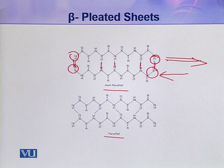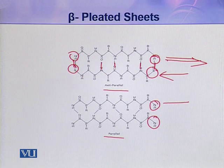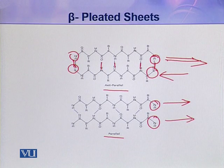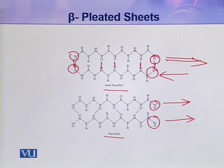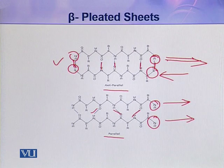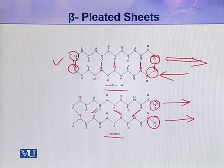In the parallel beta pleated sheet, both amino groups are on the same side, so the direction of the polypeptide chains is parallel. The hydrogen bonds are comparatively straight in anti-parallel beta pleated sheets, while they are slightly distorted in parallel beta pleated sheets. That's why anti-parallel beta pleated sheets are more stable compared to parallel beta pleated sheets.